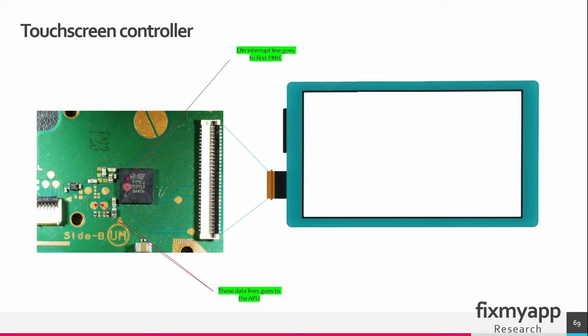When the controller has calculated the coordinates, it will send these coordinates back to the APU and this is done by the I2C interface. The APU will receive the touch coordinates from this controller and it will perform the necessary action based on the location and type of touch.